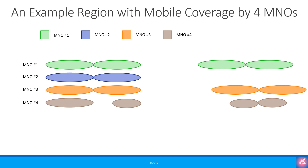Let us take a region or an area where four mobile network operators have been licensed to provide coverage. Here you can see the example coverage area by each operator. We can divide this into three different scenarios.